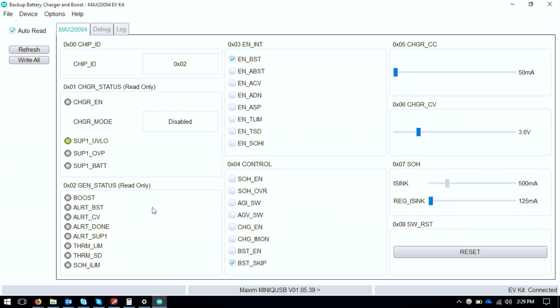So each of the boxes here represent each I2C register. Right now we're going to be looking at the ones relevant for the charger section.